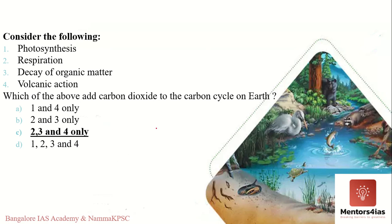We have now covered water cycle, carbon cycle, and oxygen cycle, with nitrogen cycle to follow in the next video. Here is a practice question: Consider the following — photosynthesis, respiration, decay of organic matter, and volcanic action. Which of the above add carbon dioxide to the carbon cycle on earth? Photosynthesis is not correct — producers use CO₂ and release oxygen. Respiration releases CO₂. Decay of organic matter also releases CO₂. Volcanic activity also releases CO₂. Therefore the answer is two, three, and four.